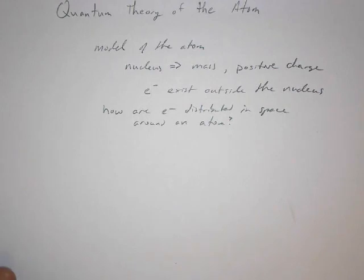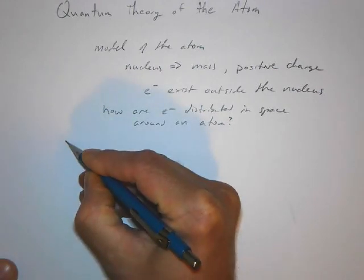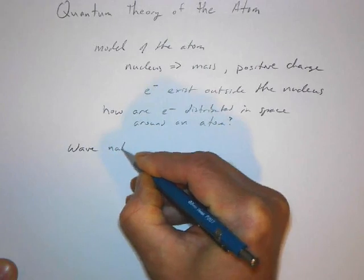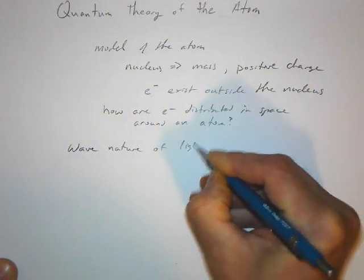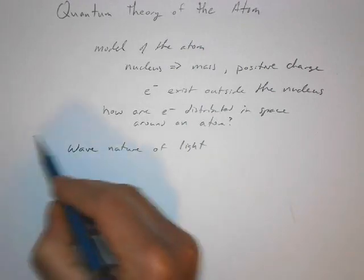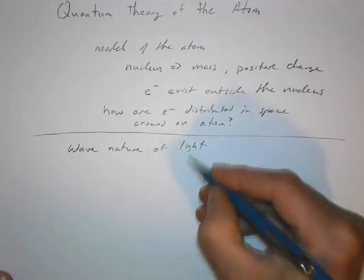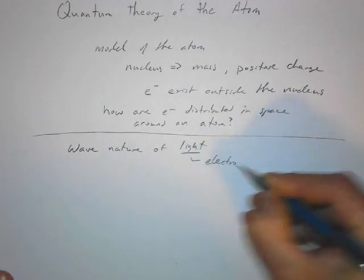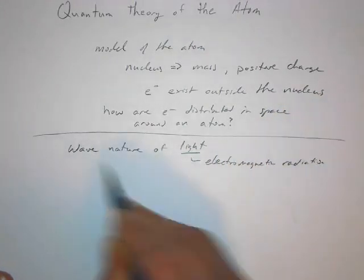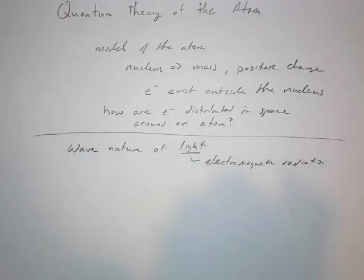Now, to be able to answer these questions, what we need to be able to do is, we're first going to look at light. And oftentimes, it's very convenient, and something that we oftentimes do is we think of light. And we think of light as being a wave. Now, for starters, light is electromagnetic radiation, and it can be described as a wave.